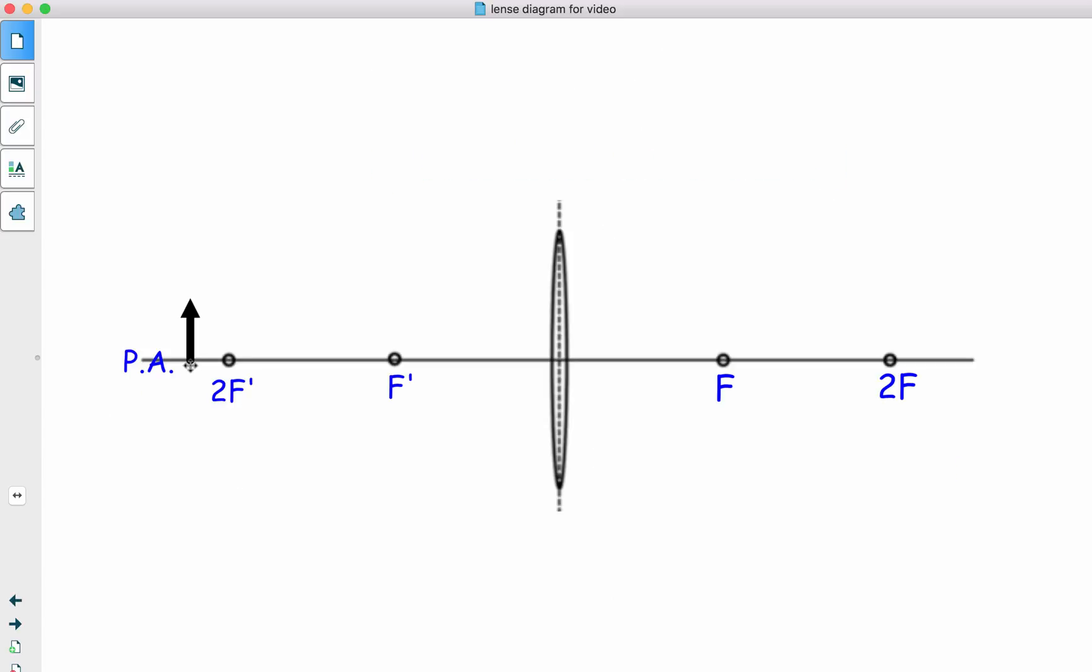So in this case, we've got the object placed here. This would be object behind 2F prime. Let's make our ray, ray number one. Parallel to the principal axis until you hit the center of the lens. Then from the center of the lens, it goes exactly through the focal point.